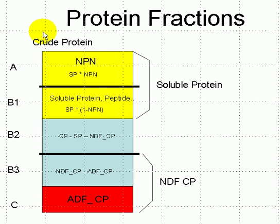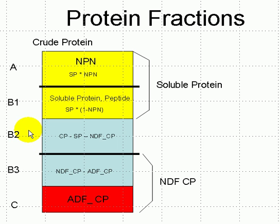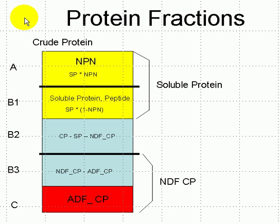So when we take the crude protein and subtract the soluble protein and then subtract the NDF protein, we're left with what's called the B2 component. This is the intermediately digestible crude protein. These fractions are what are used in CPM nutrition programs to designate the various fractions of crude protein. Of course, these will vary from feed to feed and how the feed was harvested and processed.